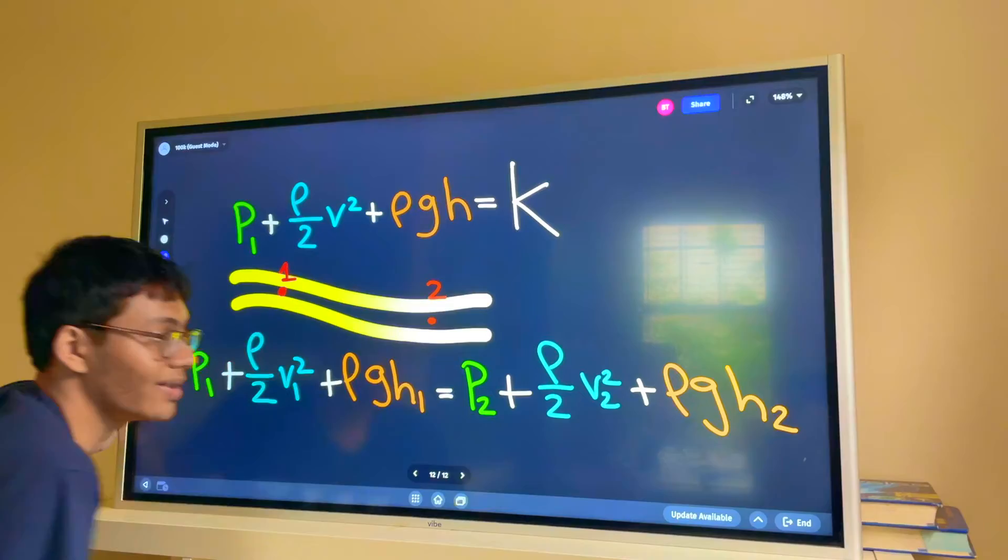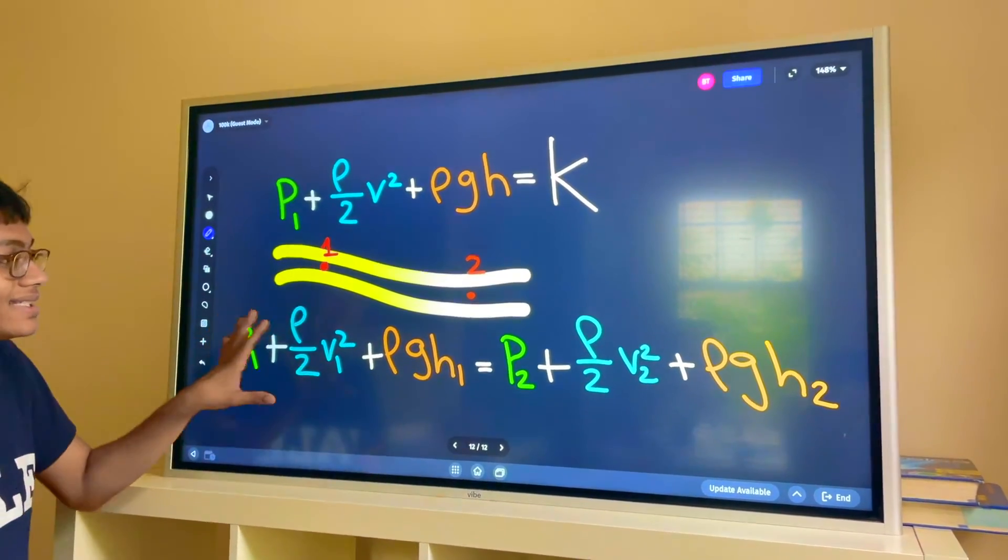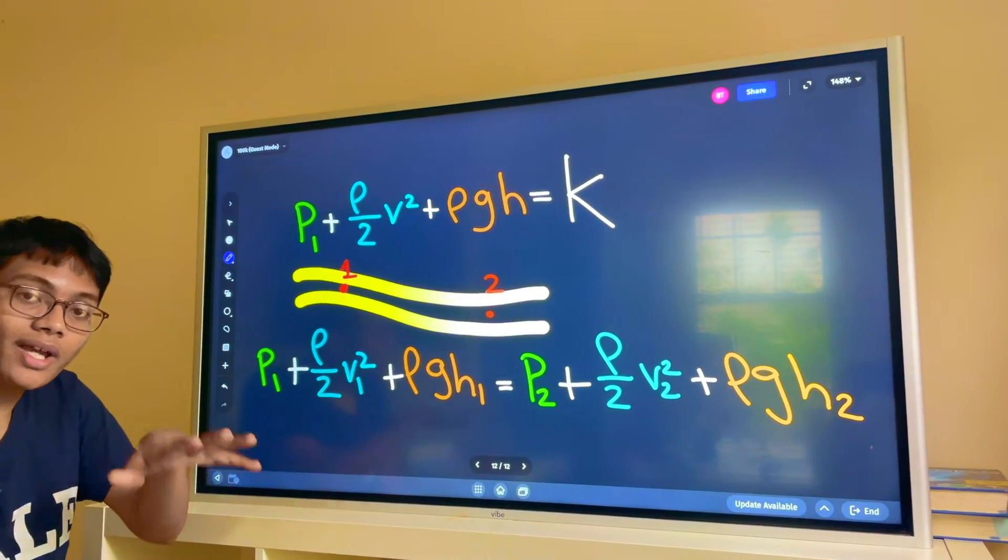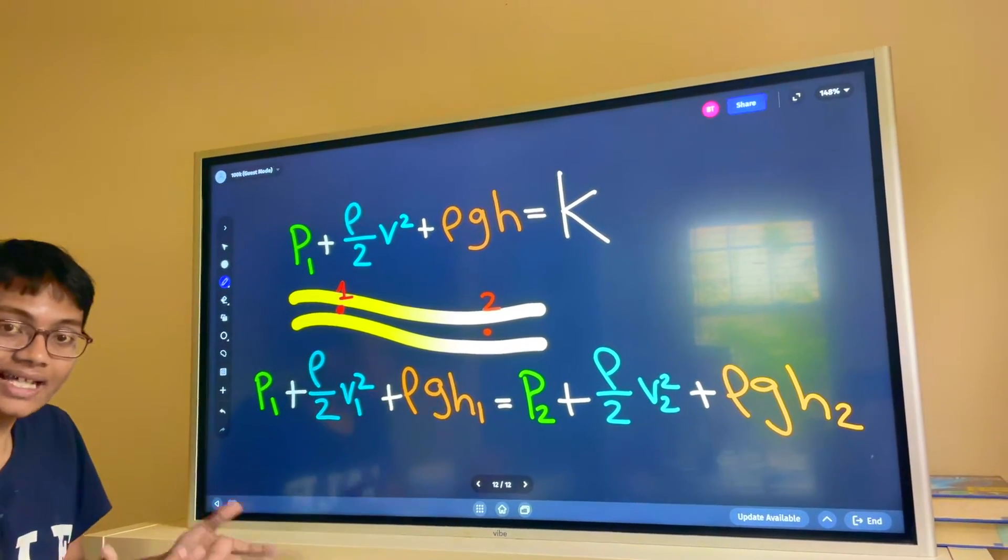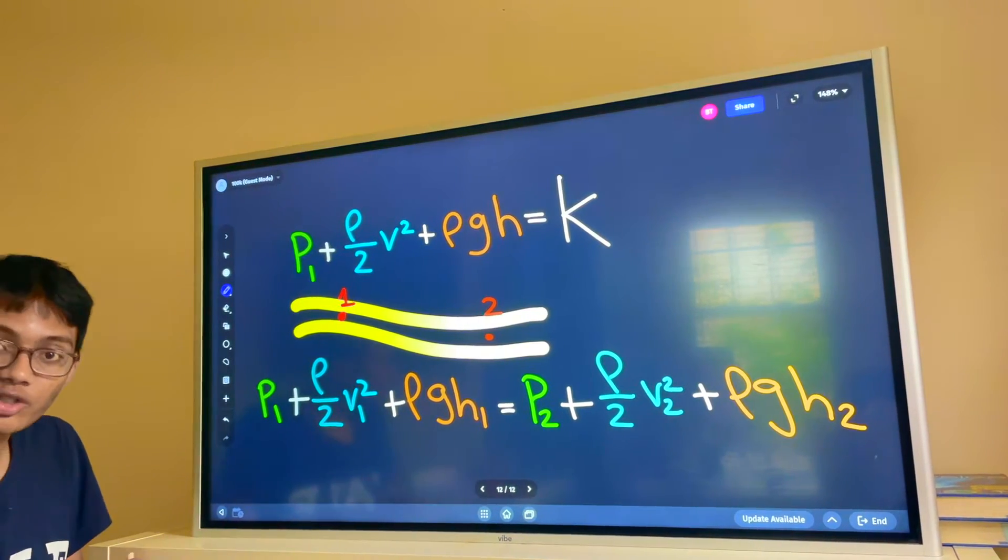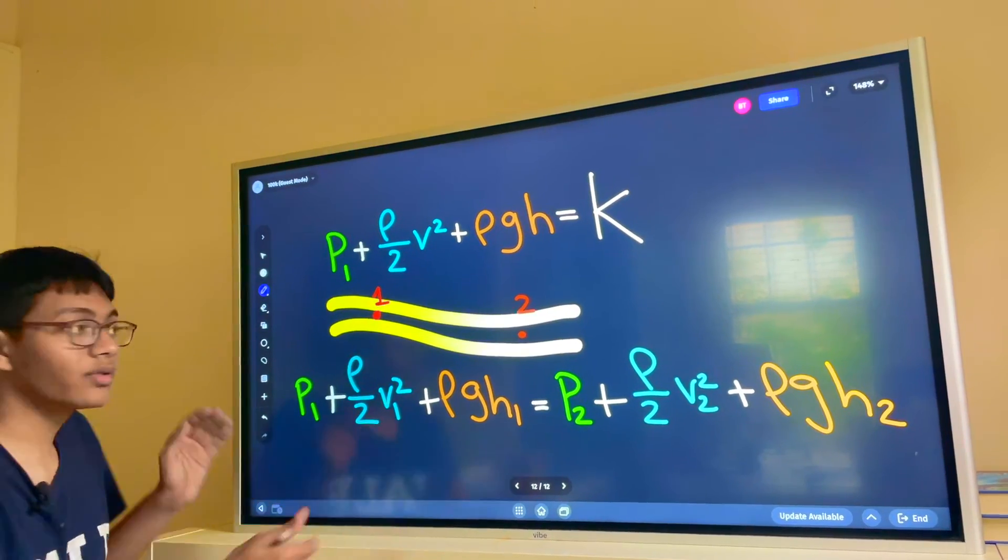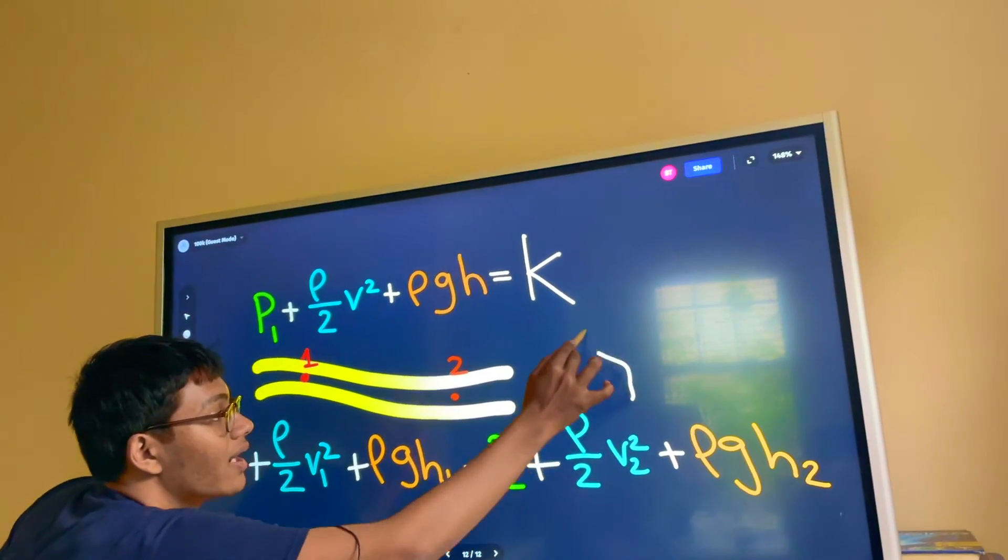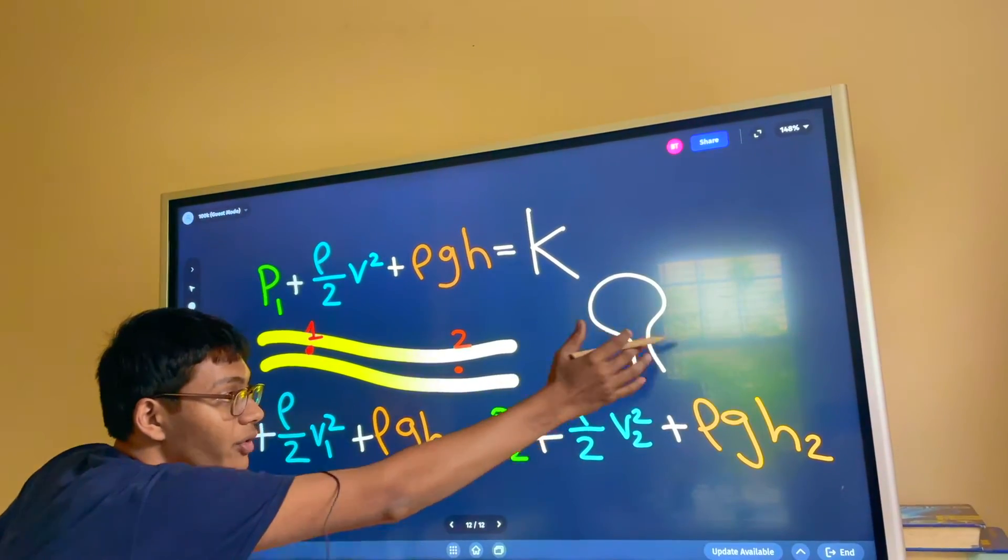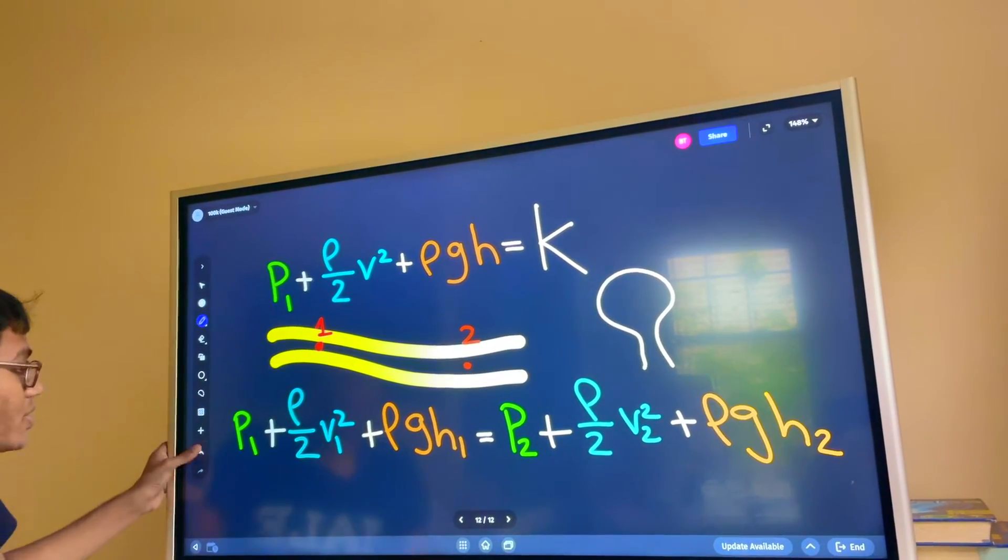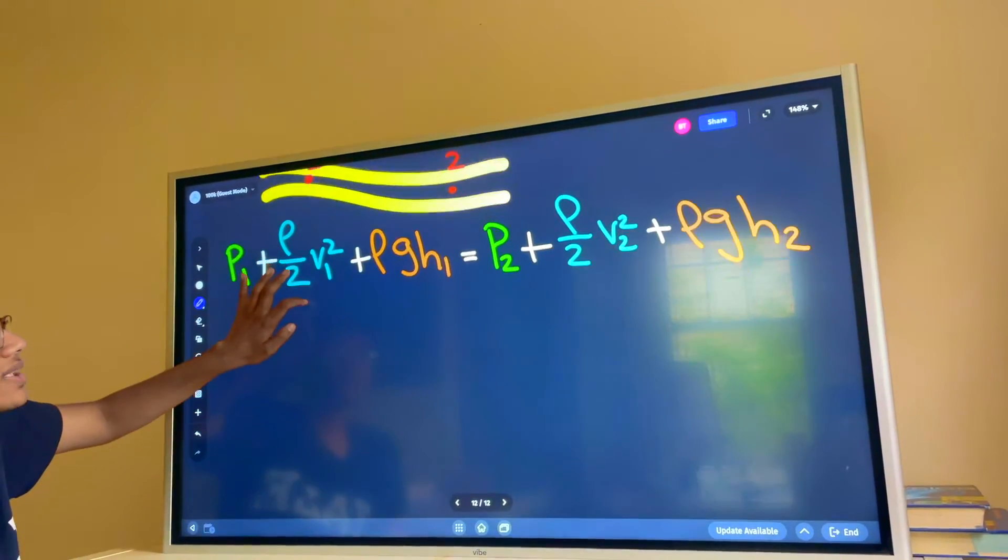And this explains how airplanes fly, how fluids move in pipes. This is how you can measure the pressure in a fluid at two different points using this formula. That's how apartments measure how much fluid to pump into an apartment. That's how water towers work. Water towers work using Bernoulli's principle. They measure how much water is flowing through the pipes using this equation.